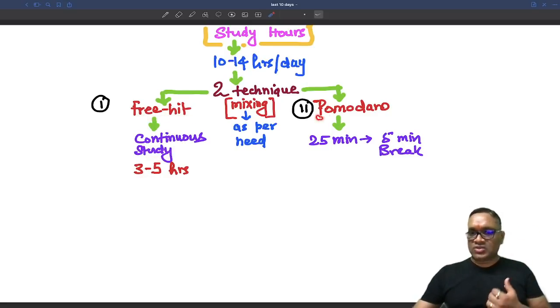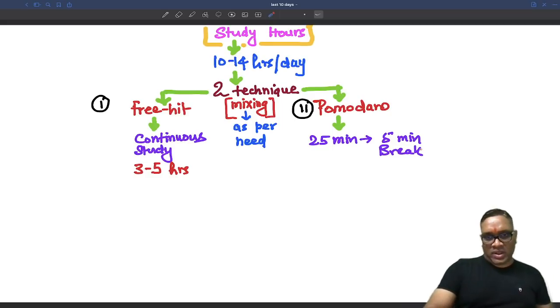But if you are feeling tired and exhausted, use Pomodoro technique, 25 minutes, then 5 minutes break, till you regain your momentum and energy back into your mind and body.